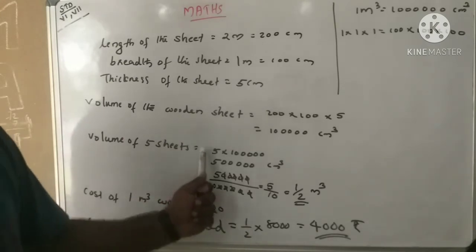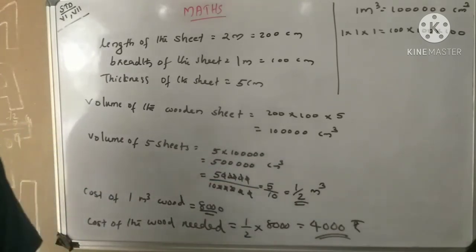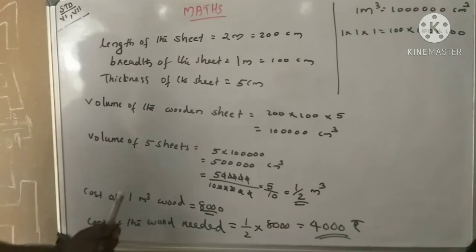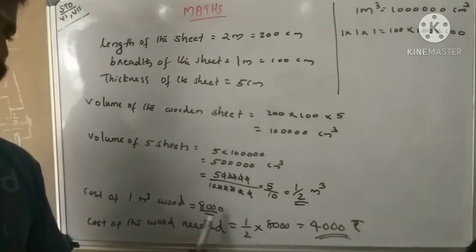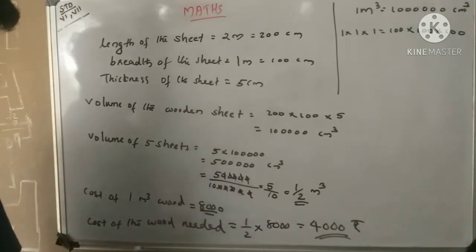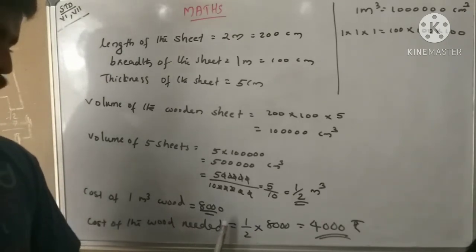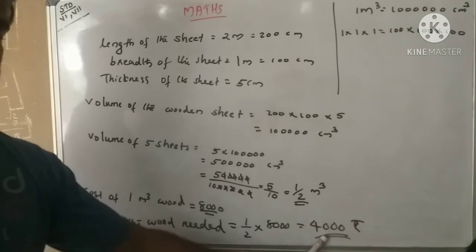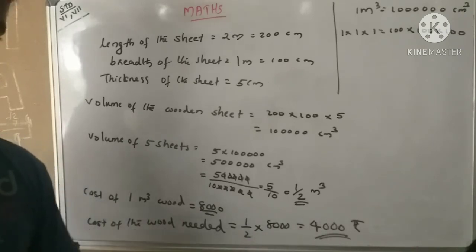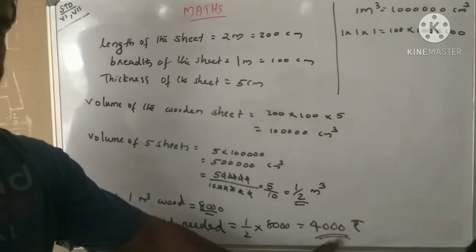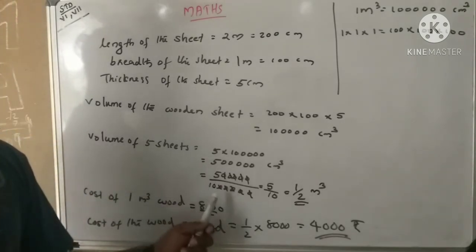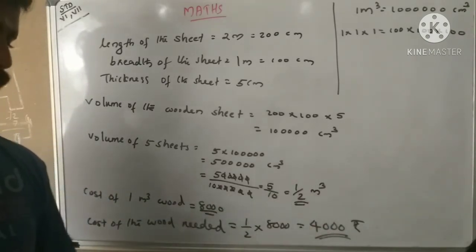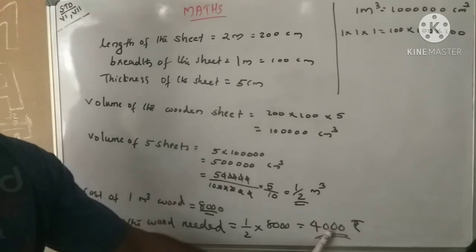Cost of one meter cube of wood is 8000. Cost of wood needed: volume is half meter cube. Half into 8000 equals 4000. So the total cost is Rs. 4000.